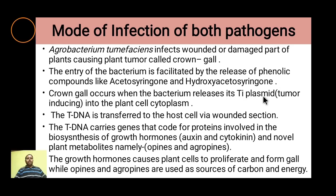Crown gall occurs when the bacterium releases its Ti plasmid (tumor-inducing plasmid) into the plant cell; for Agrobacterium rhizogenes, this is the Ri (root-inducing) plasmid. The T-DNA present in both plasmids is transferred to the host cell via the wounded section. The T-DNA carries genes encoding proteins involved in biosynthesis of growth hormones such as auxins and cytokinins, and novel plant metabolites such as opines, agropines, and octopines — specific compounds that serve as nutrients for the bacteria. The growth hormones cause the plant cell to proliferate.